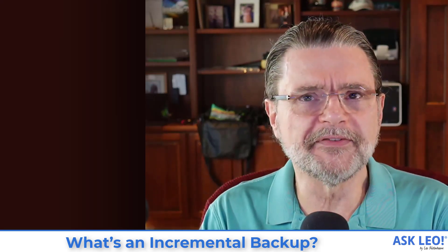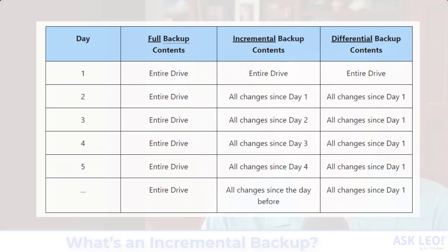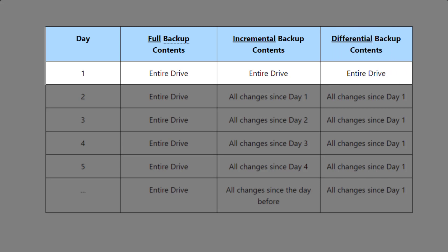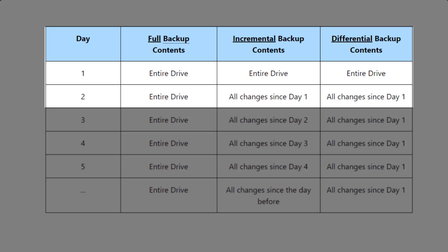Let's walk through a comparison of exactly what those different backups look like and what they would contain. On day one, a full backup contains the entire drive as expected. An incremental backup on day one is also our first backup, so it contains the entire drive — same for a differential backup. They all three start exactly the same way; the first backup is always a backup of everything. On day two, a full backup is always everything, so that doesn't change. An incremental backup will back up only those things that have changed since the previous day, since day one. A differential backup at this point is the same, because the only thing it has to compare against is what was backed up on day one. So a differential backup on that second day looks exactly like an incremental backup.